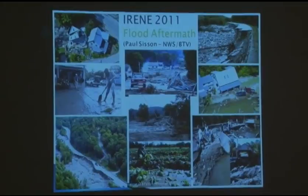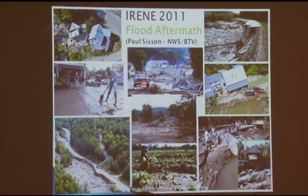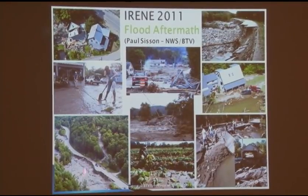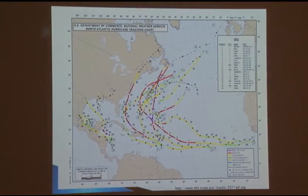Katrina was in 2005. Let's fast forward to 2011 and look at Irene. The images for Irene are probably still fresh in mind — it's the flood of record for us here. A lot of these images are put together by colleagues at the National Weather Service at Burlington International Airport. We saw things like loss in the Intervale and a lot of infrastructure damaged as a result of Irene. Irene was one of the few hurricanes to make landfall in 2011, and its track was actually a success story for the National Weather Service.